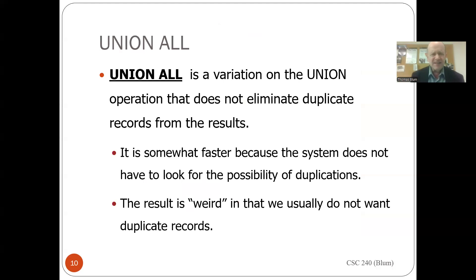There is also something called UNION ALL, which will add in duplicate records. We said when a character was voicing themselves and appeared in both lists, a standard union would only show them once. But if you for some reason wanted them to appear twice, that's possible by saying UNION ALL. I find that usually weird — you usually don't want duplications in database results — but it's possible if you wanted it.